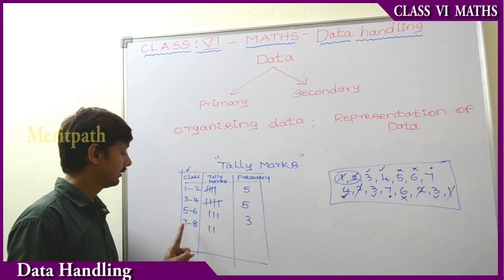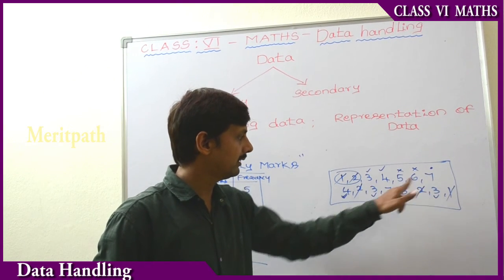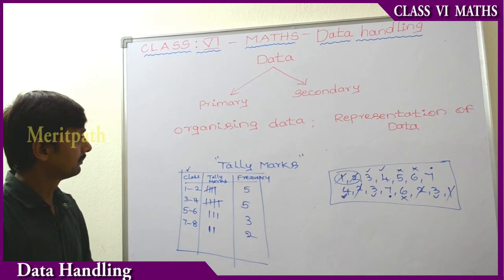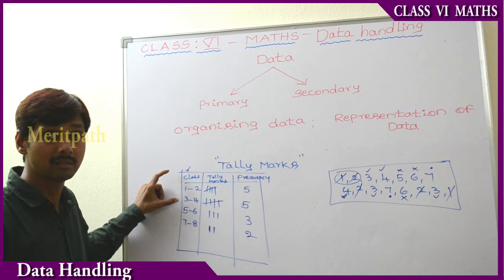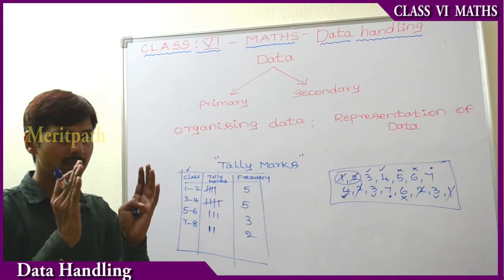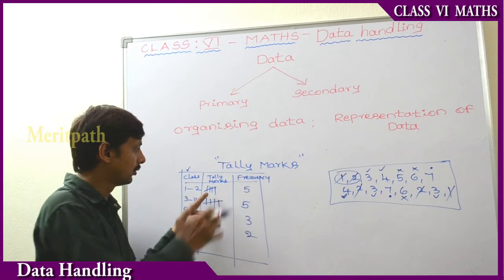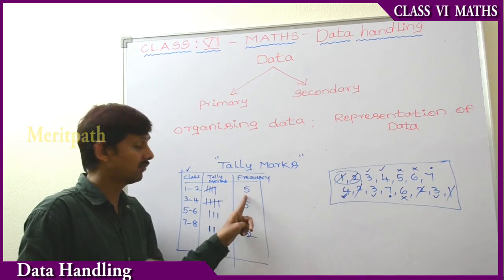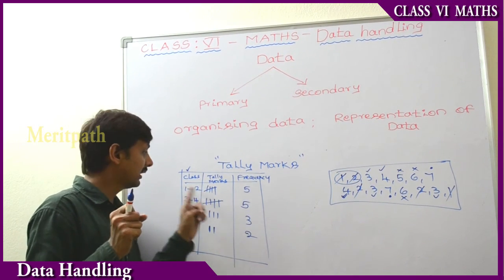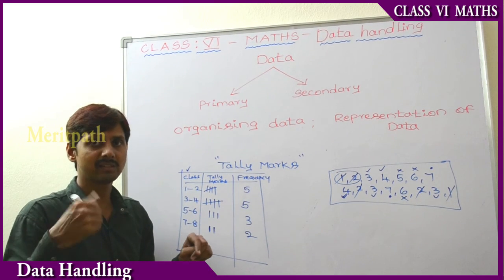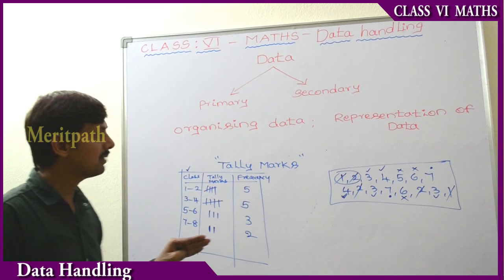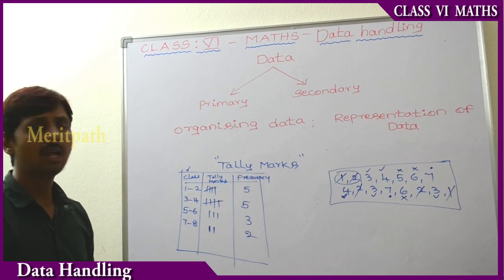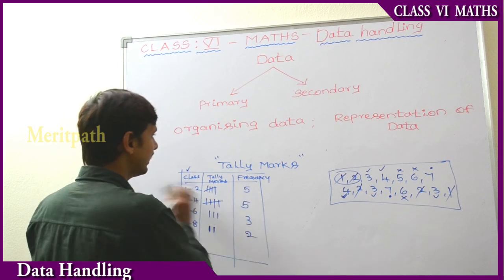Between 7 and 8, there are values: 7, and a couple more, giving us a count for that class. So these are all tally marks. We discussed about the class — a group is nothing but we have taken a group between some numbers. Frequency is the total number of times a value is repeated: for 1 to 2, values appear 5 times; for 3 to 4, values appear 5 times; tally marks are the vertical lines used to count clearly. So we discussed data, primary and secondary data, organizing data, and representation of data.